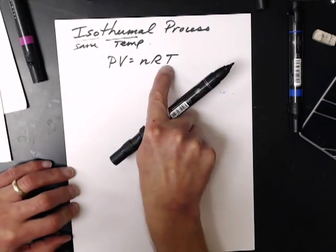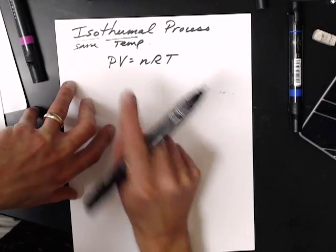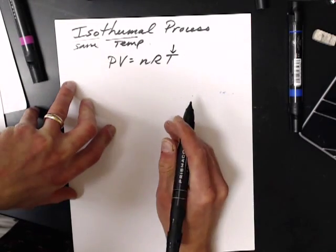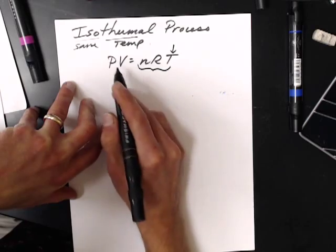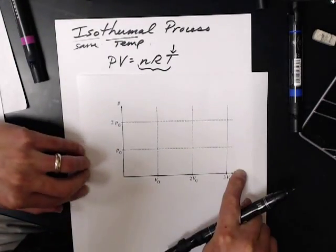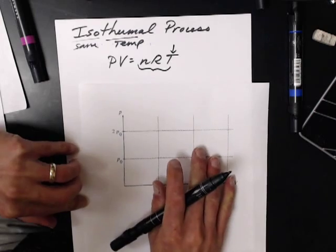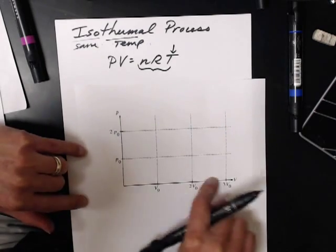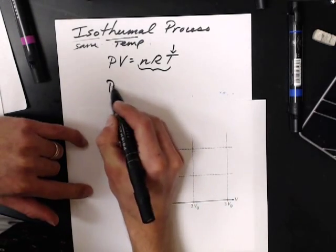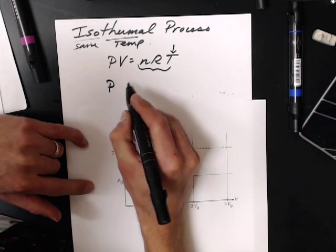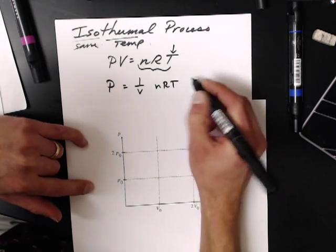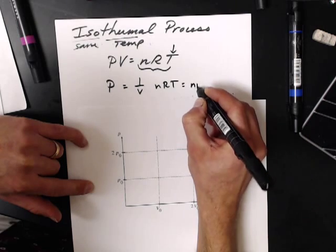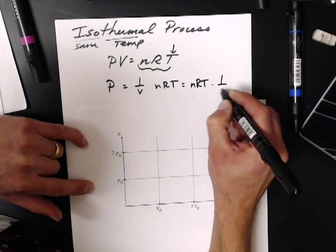So let's take a look at our ideal gas law. My temperature is not changing, so this whole thing is a constant. If I want to look at my PV graph now — P and V — P is now going to be changing. This is going to be NRT times 1 over V. So there's my constant.